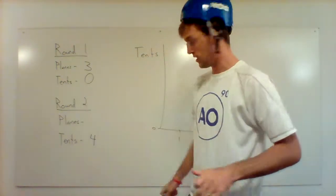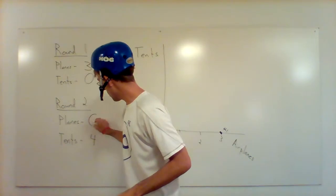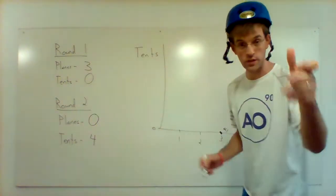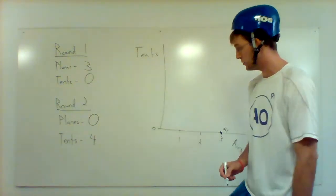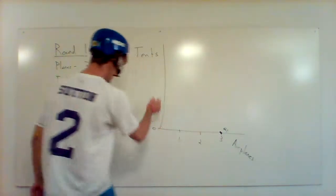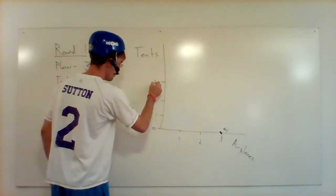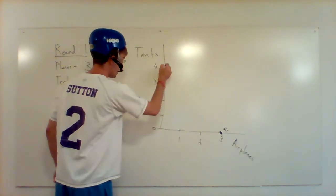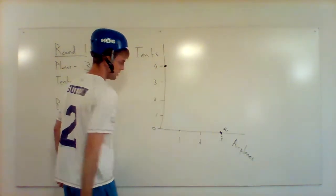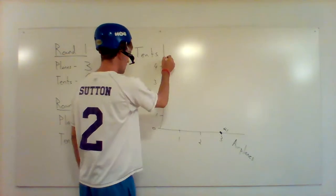Make as many tents as you can. So you made zero airplanes. So now I want you to put this dot on the graph too. This time I made four tents. So tents are over here. So I'll go one, two, three, four. Put a dot here. And we'll call this number two.